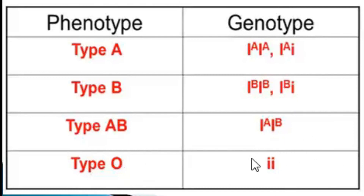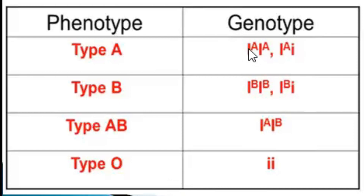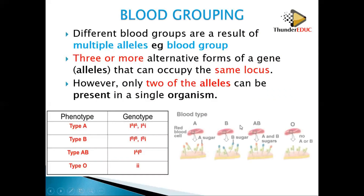You need to know this before your exam. Blood groups have four phenotypes: A, B, AB, and O. The blood groups are controlled by three alleles: capital I-A, capital I-B, and small i. There are six genotypes in total. So: genotypes are six, phenotypes are four, and alleles are three.